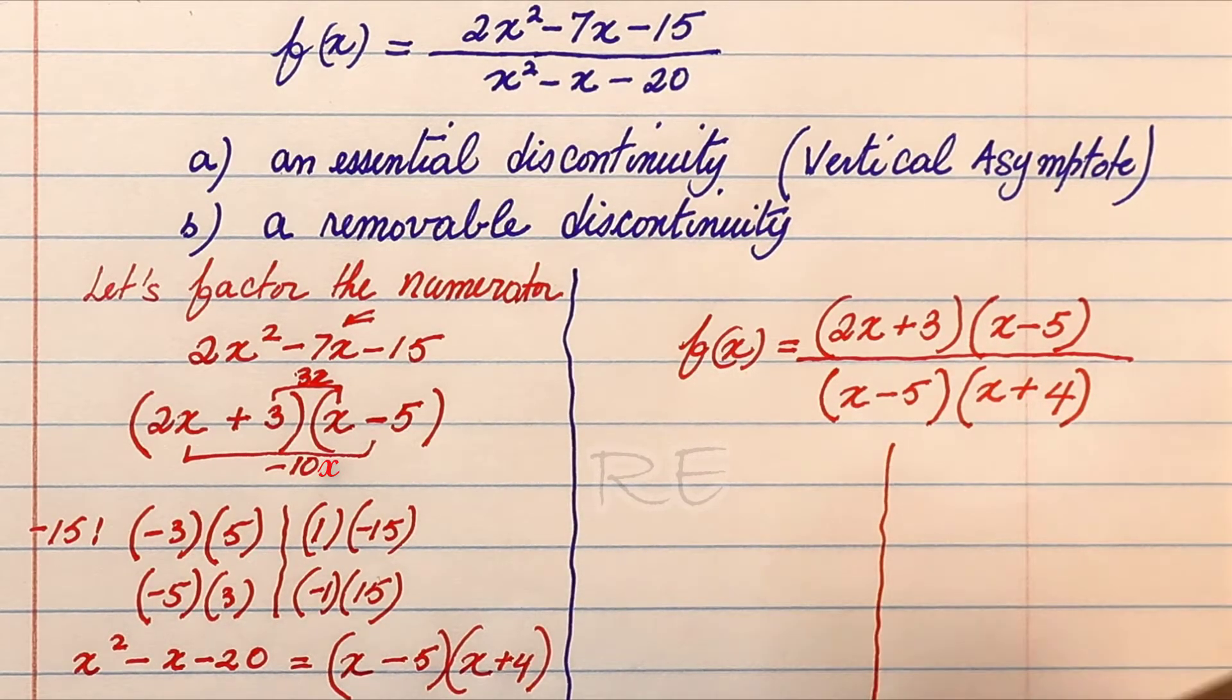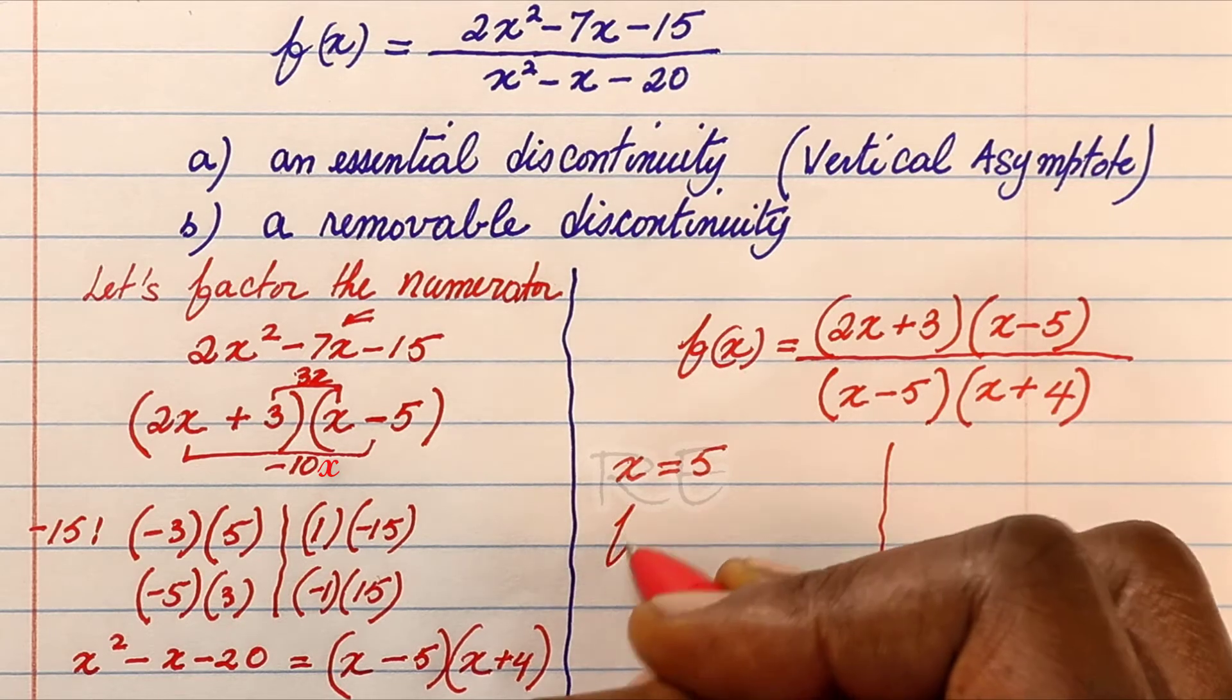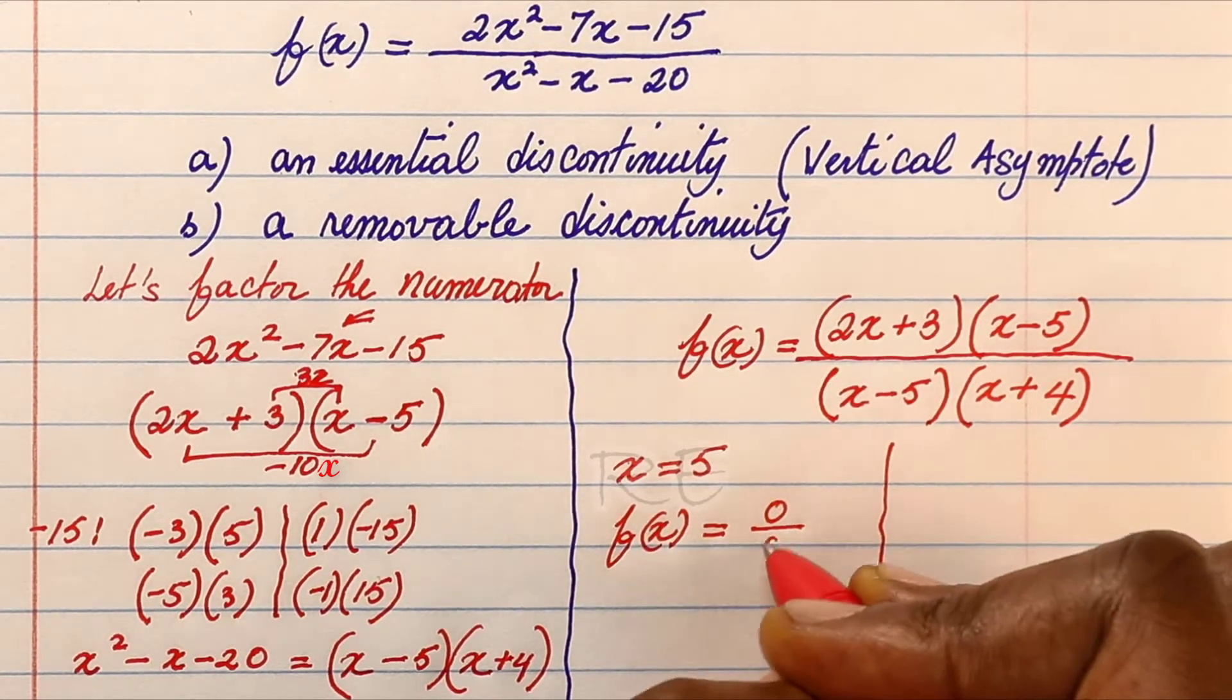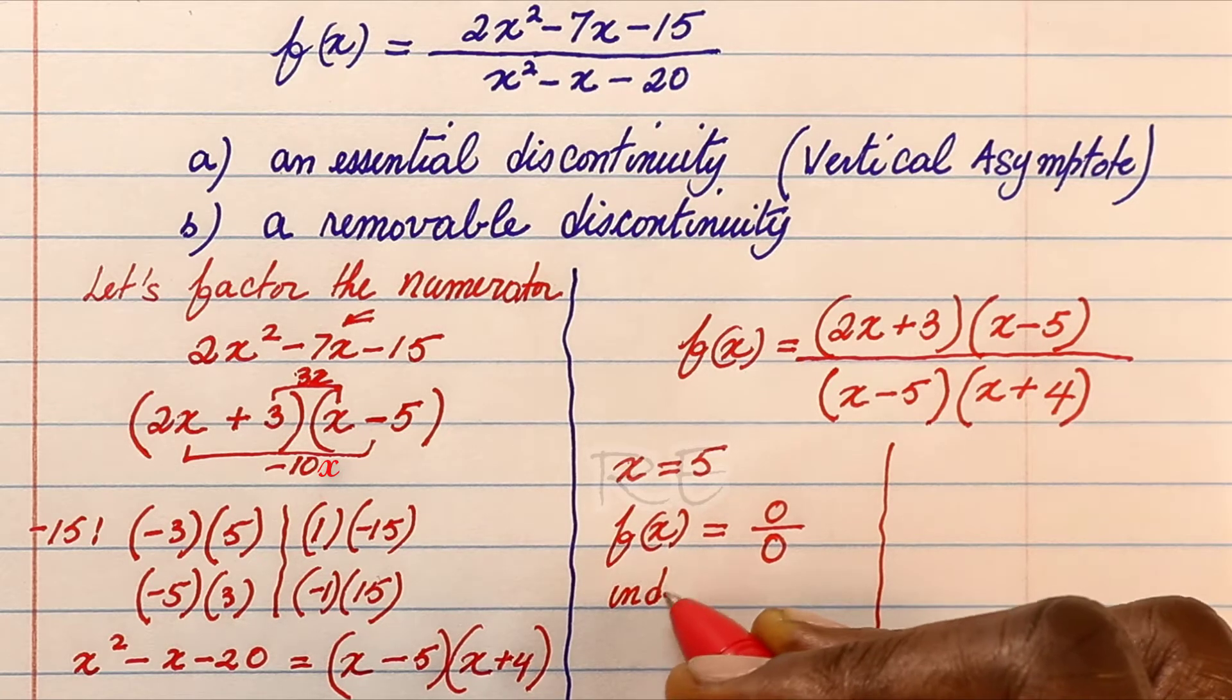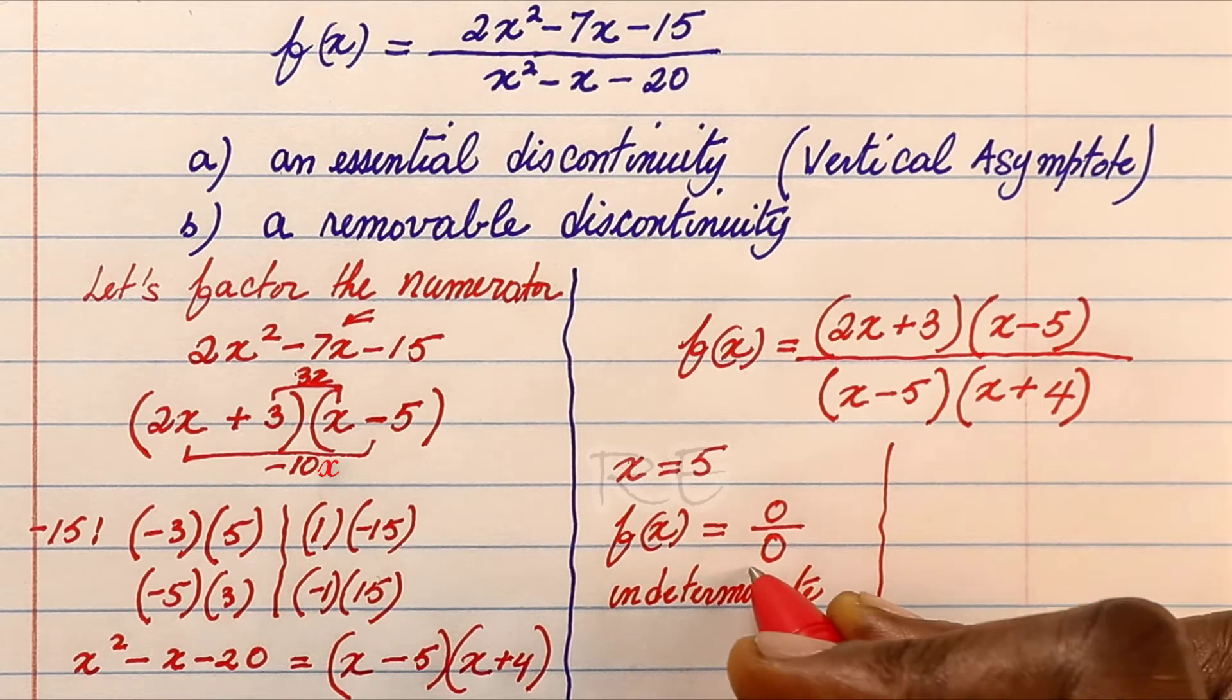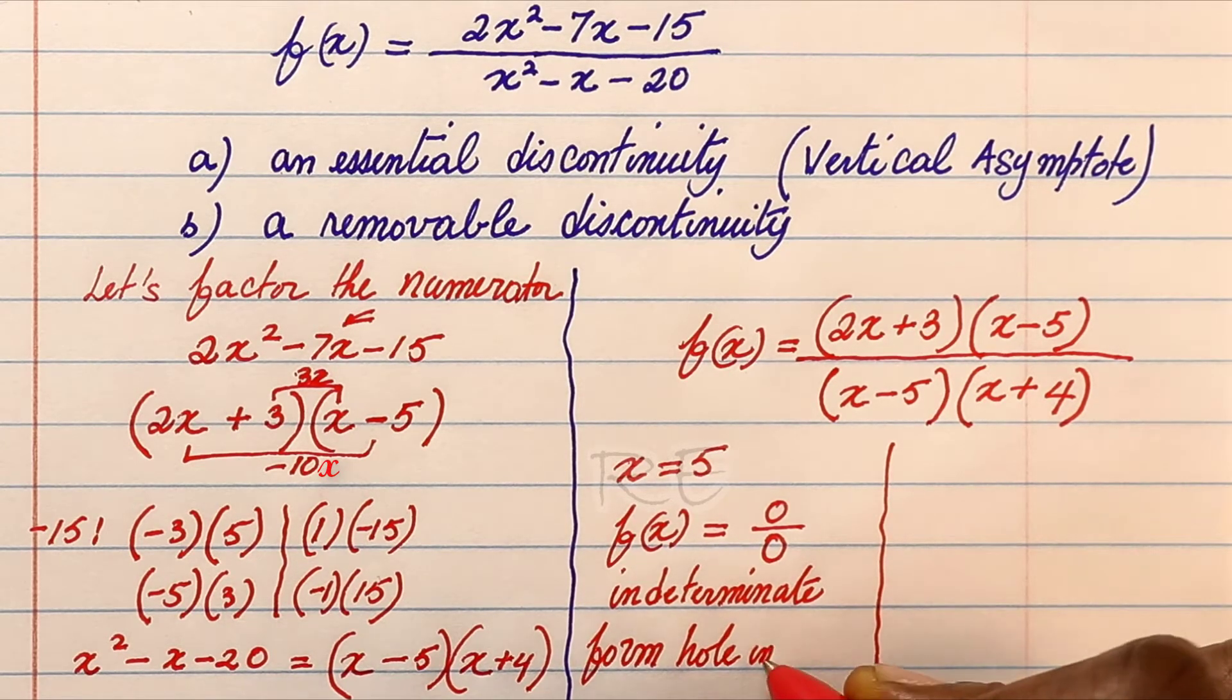Now x equal to 5, f of x will become 0 over 0, since x minus 5 is 0. Therefore we have a removable discontinuity because this form is the indeterminate form. So that's the hole in the graph.